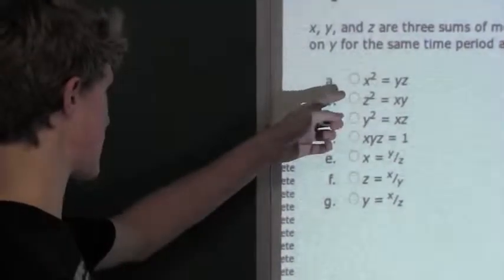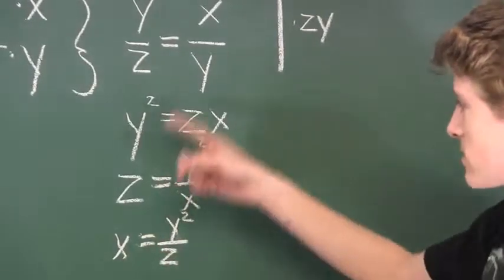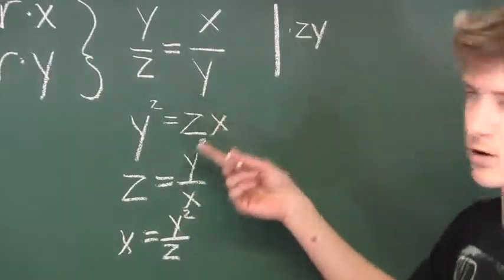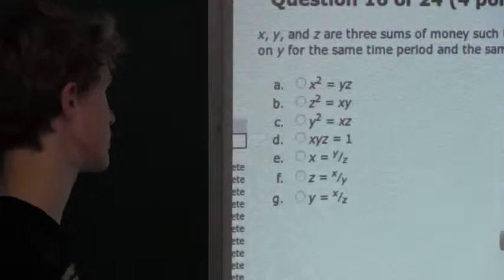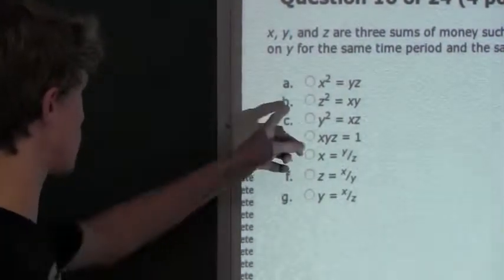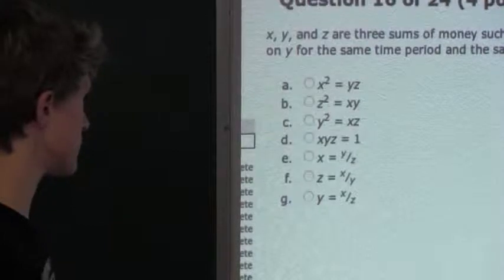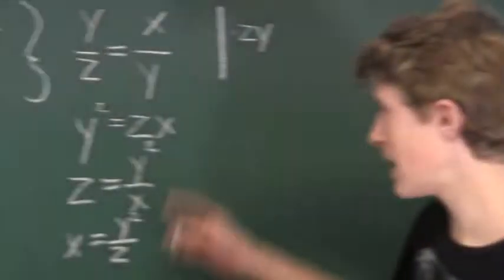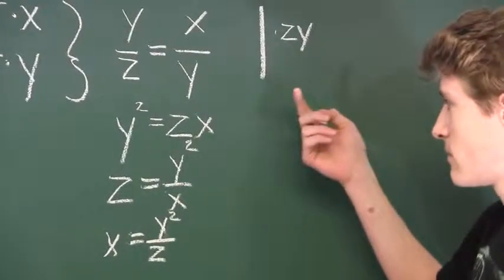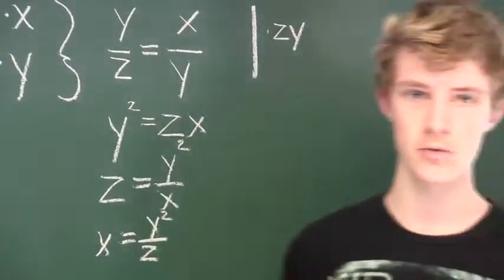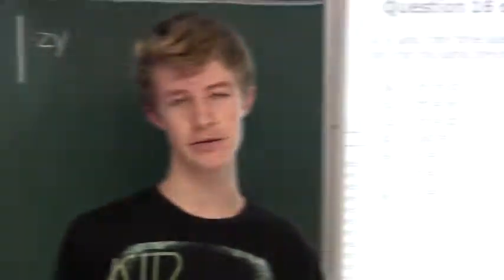Option A says X squared equals YZ. Here we have no X squared, so we know that option A is not correct. Option B says Z squared equals XY. We have no Z squared and we have no XY, so we know that option B is also incorrect.